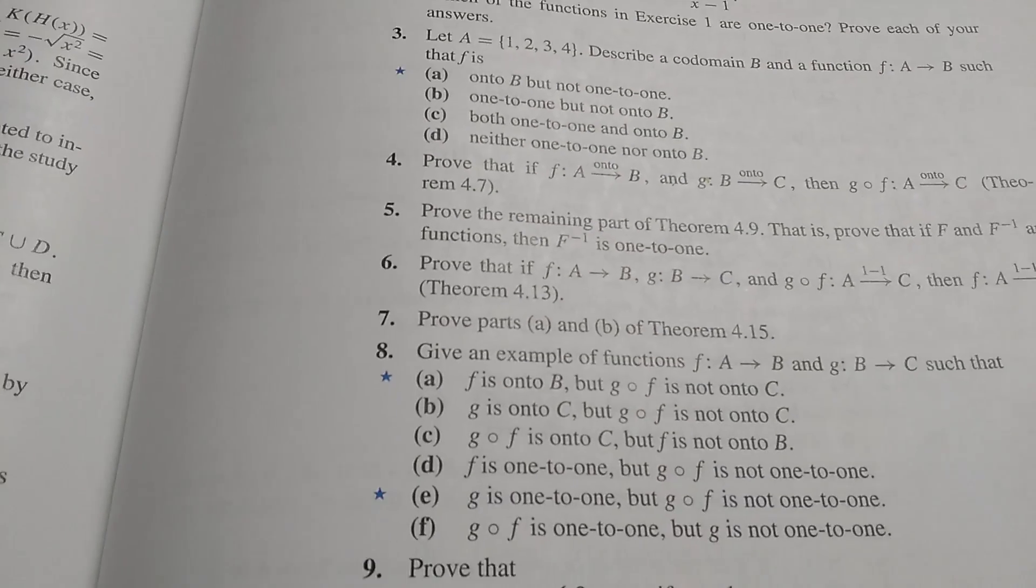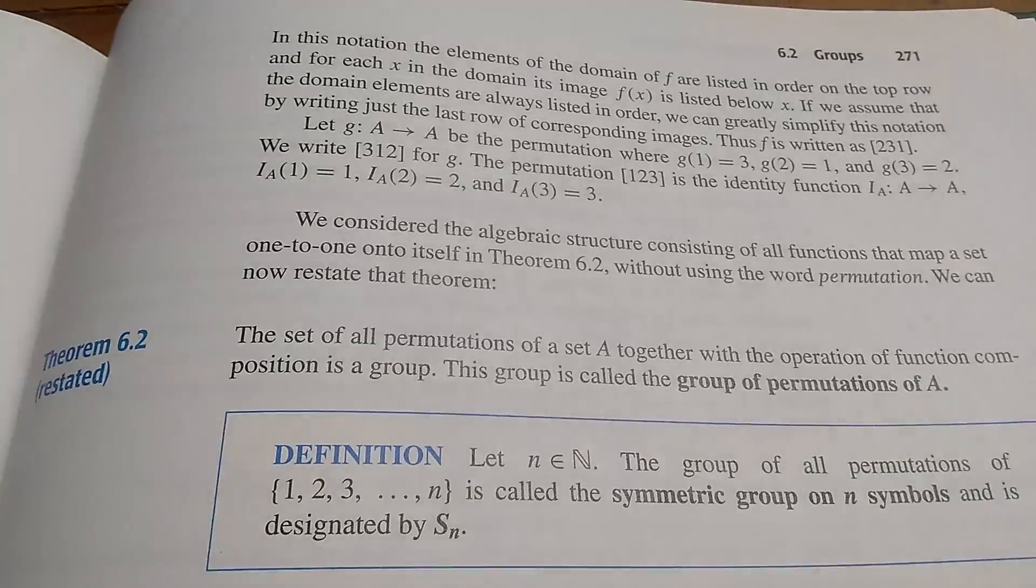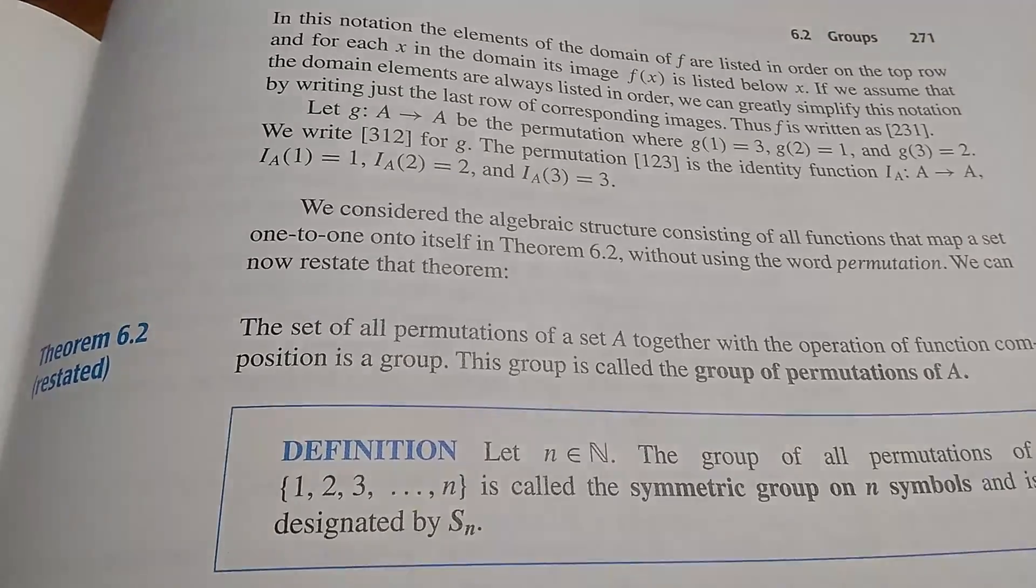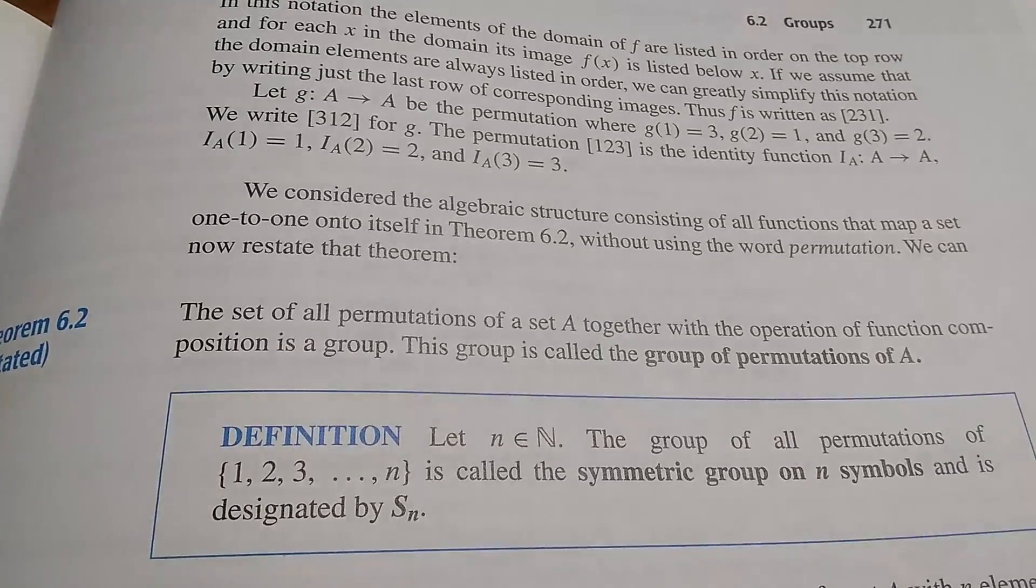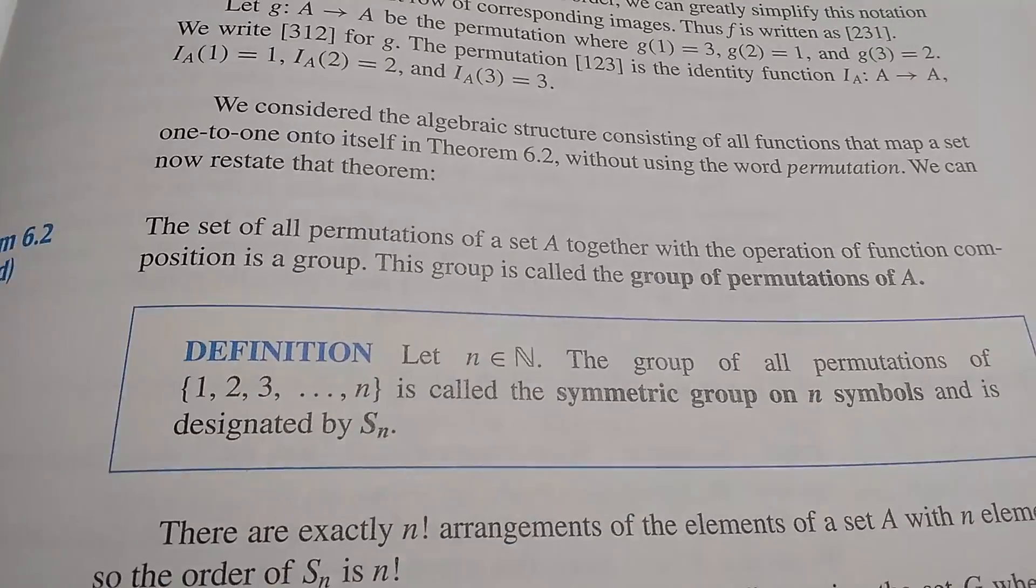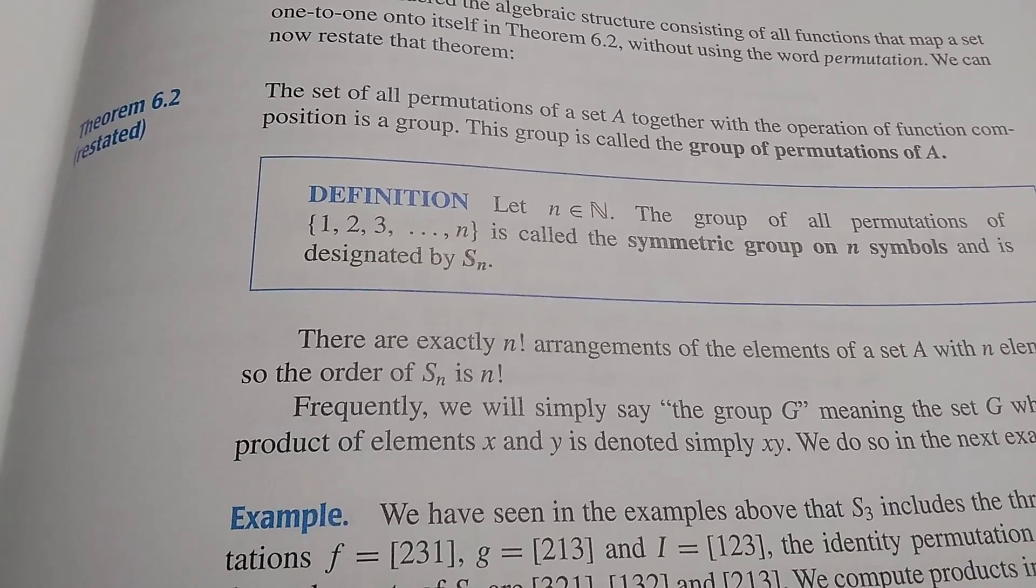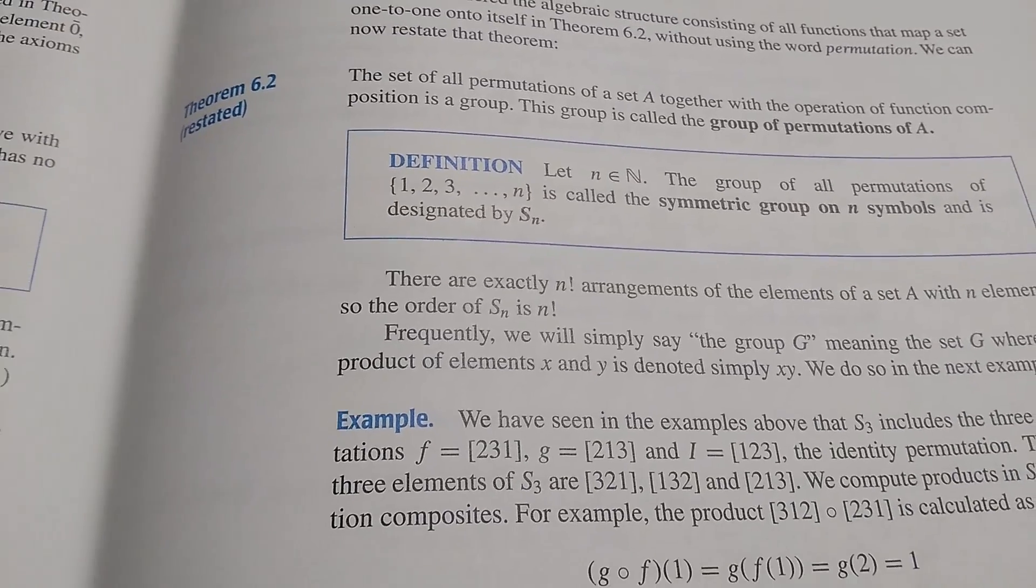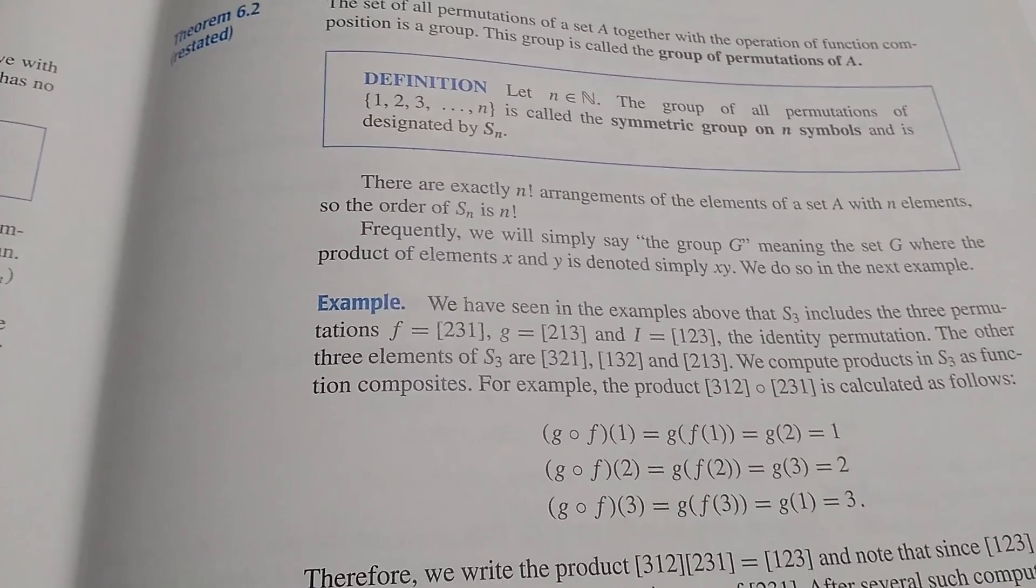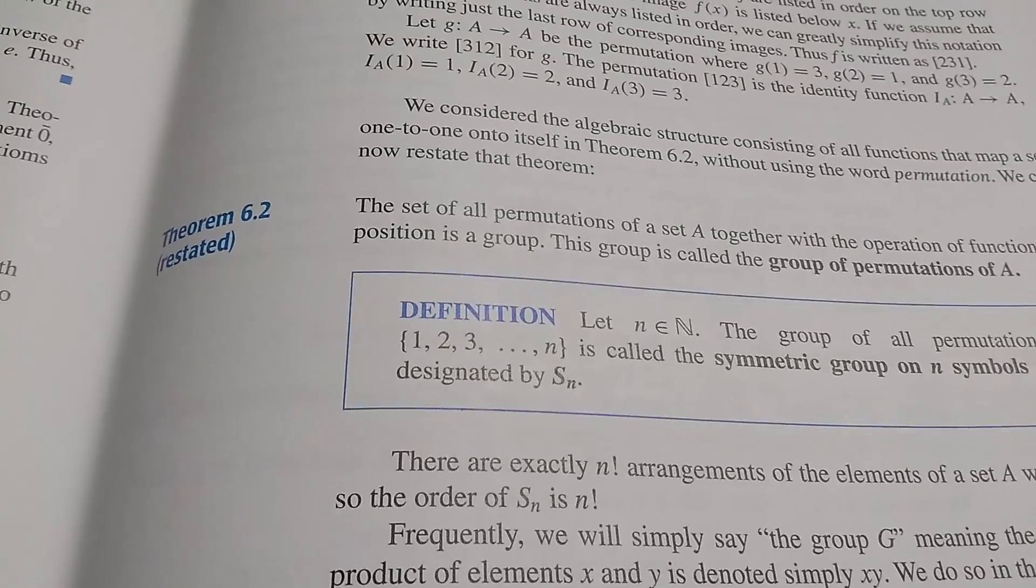This is the section on groups. You can see it does talk about group theory in the book, and here it's defining the symmetric group on n symbols, so it does talk about permutation groups. This is an excellent advantage to this book. Not all logic and proof books do this, so that really sets this one apart.